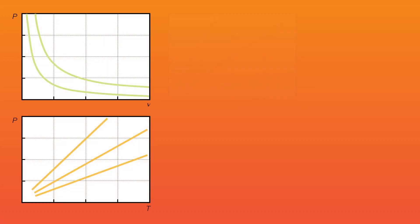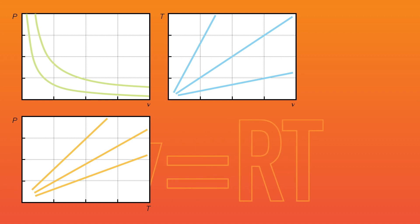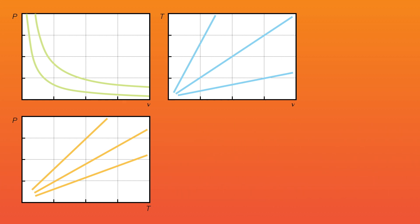These property charts are powerful visual tools for studying ideal gas behaviors. The charts not only relate the ideal gas properties, but each point on these charts represents a state of that gas. The same state can be identified on other property charts. More importantly, we can show what happens when the state of the gas changes.